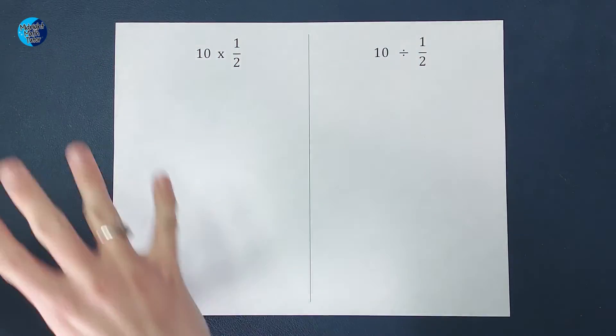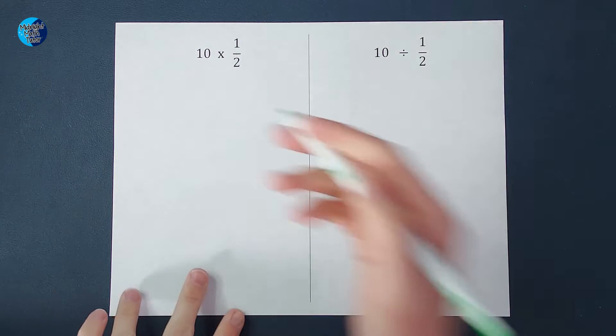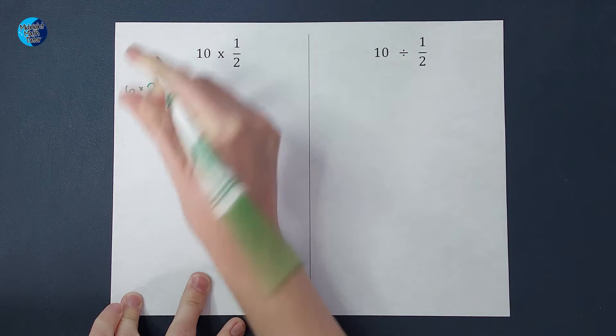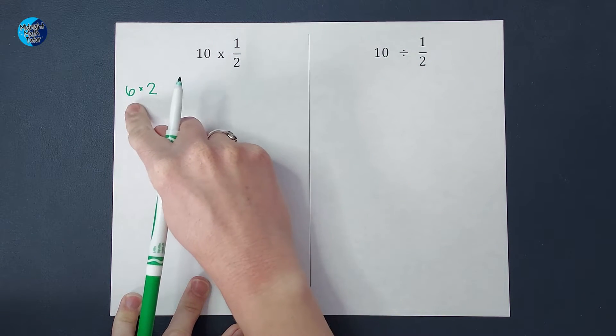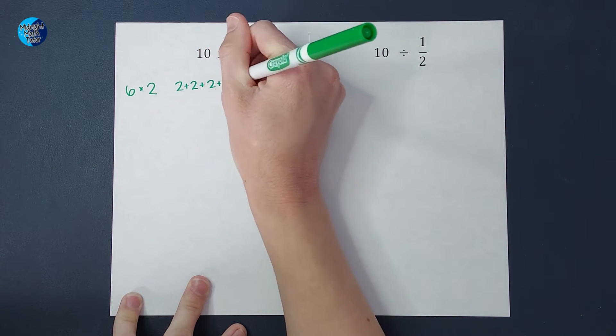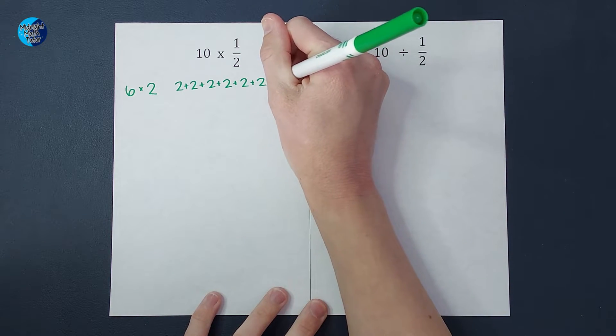The first thing we're going to do is we're going to think of this without fractions for half a second. So I want us to think about six times two for a second and what that means. One way to think of it is six twos. So when I add six twos together, I get 12.